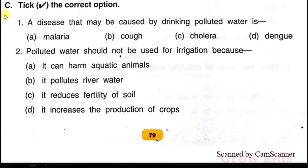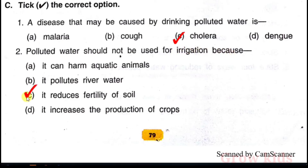Section C: Tick the correct option. Question 1: A disease that may be caused by drinking polluted water. Question 2: Polluted water should not be used for irrigation because it reduces the fertility of soil.